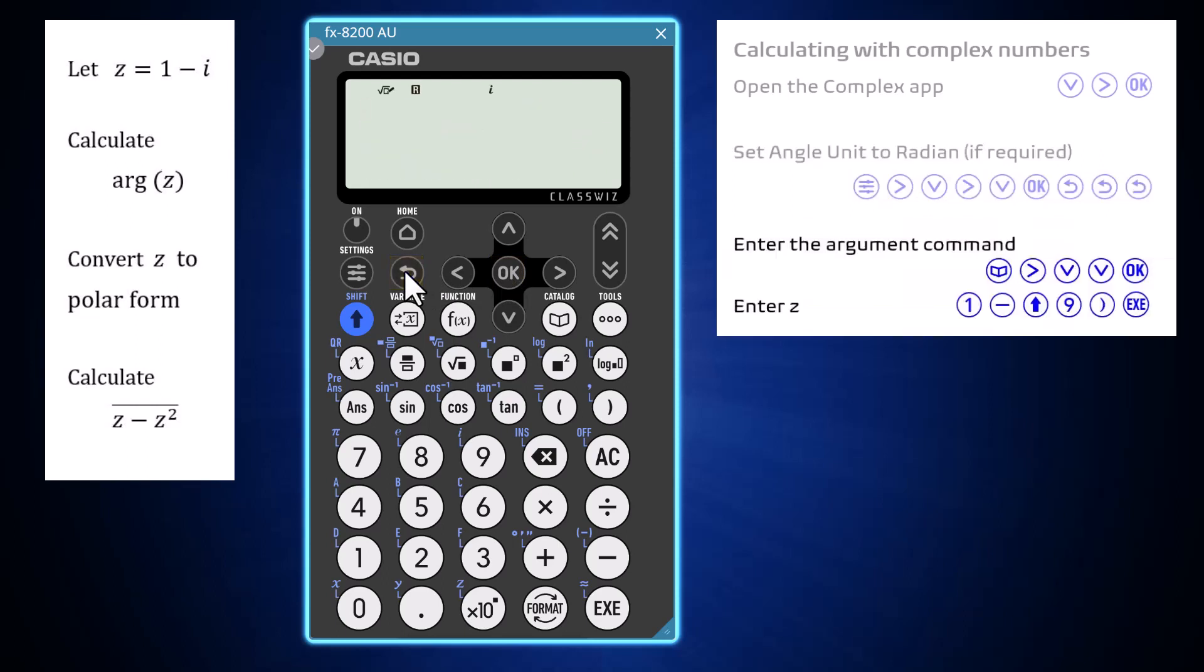To find the argument of this complex number, first enter the argument command, which is found in the catalogue. Arrowing right for complex, arrowing down to argument, and choosing the command by pressing OK.